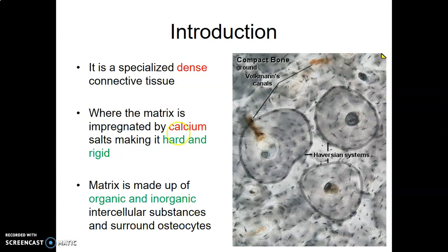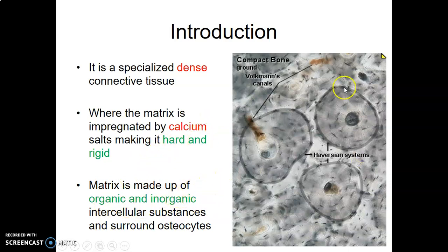We go to bone. Bone is specialized, dense connective tissue. The matrix has both organic and inorganic matter. Organic includes glycoproteins, proteoglycans, chondroitin sulfate, heparan sulfate, and glycosaminoglycans. Bone also has inorganic components where you have calcium — such as calcium hydroxide and calcium apatite — and that's what makes bone hard. We have compact bone, the outer part of bone, and spongy bone, the inner soft part where you have the marrow.